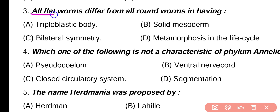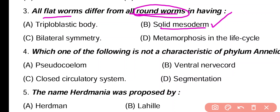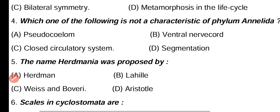Question 3. All flat worms differ from all round worms in having: triploblastic bodies, solid mesoderm, bilateral symmetry, metamorphosis in life cycle. Correct answer is option B. Flat worms have solid mesoderm and are acoelomate animals, while round worms are also acoelomate but not mesodermally trioblastic, so flat worms and round worms differ from each other on the basis of solid mesoderm.